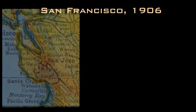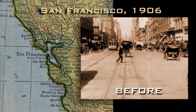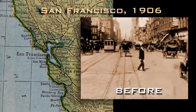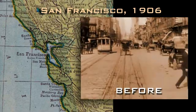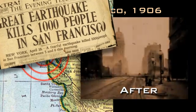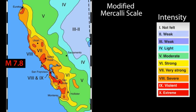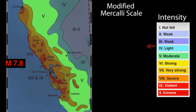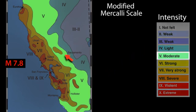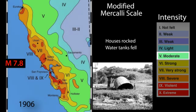But where did shake maps come from? After the 1906 magnitude 7.8 San Francisco earthquake, an intensity map was created using reports by California residents. Numbered colors represent the modified Mercalli intensity scale, which reflects the effects of an earthquake. In Zone 5, moderate shaking was felt — houses rocked, cracking plaster, and some water tanks toppled over.